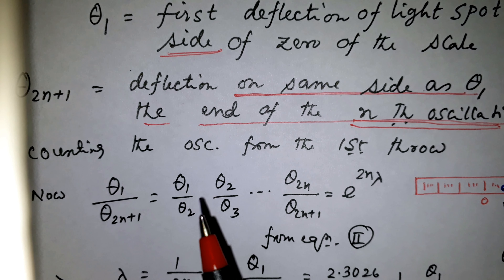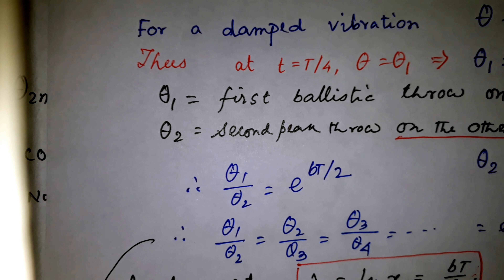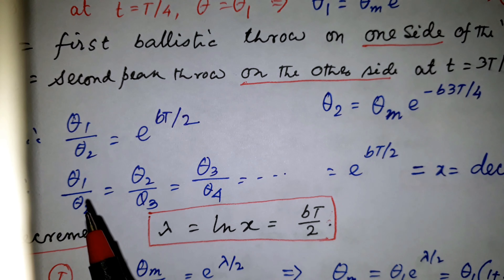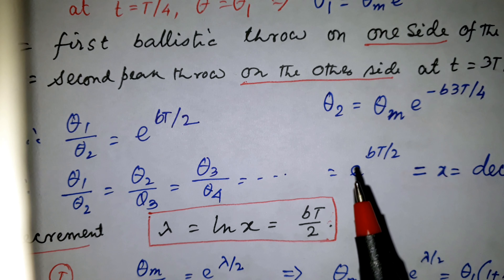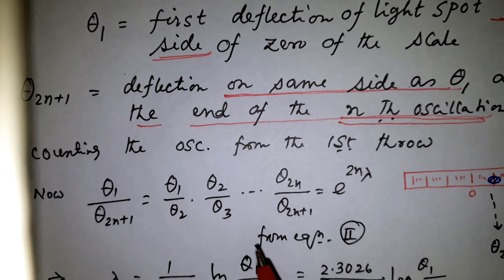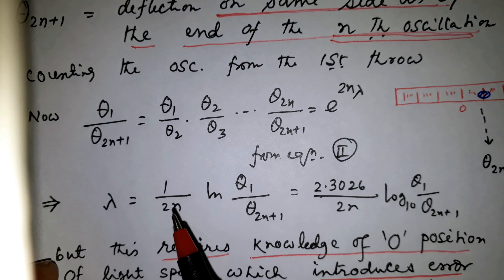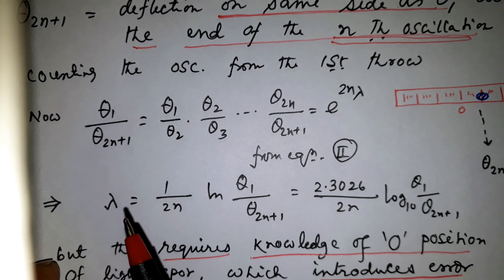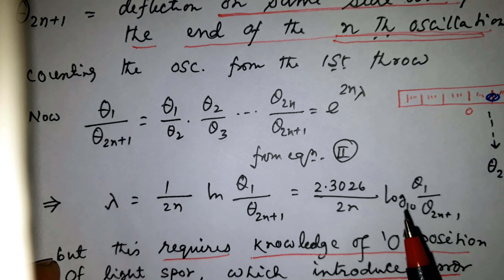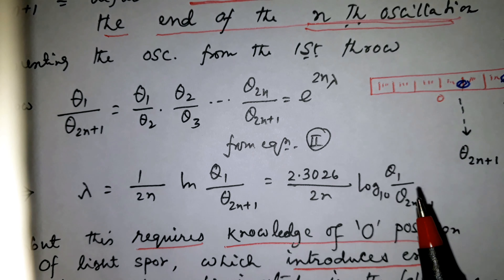Then theta_1 divided by theta_(2n+1) can be written as (theta_1/theta_2) times (theta_2/theta_3) and so on, with successive terms canceling, leaving theta_1/theta_(2n+1). Each ratio equals e to the power lambda. Since there are 2n terms, theta_1/theta_(2n+1) equals e to the power 2n·lambda. Taking log on both sides: lambda equals (1/2n) ln(theta_1/theta_(2n+1)), or equivalently in log base 10.